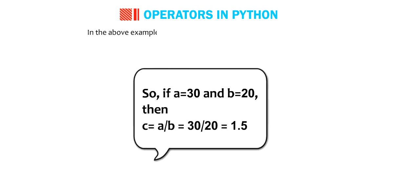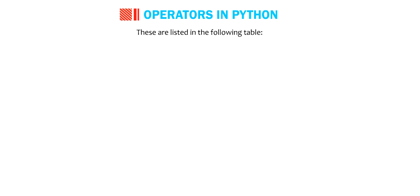The values on which the operators operate are known as operands. In the above example, slash is an operator and a, b, and c are operands. Python provides different types of operators to work with. These are listed in the following table.